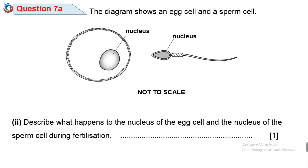Question 7A2: Describe what happens to the nucleus of the egg cell and the nucleus of the sperm cell during fertilization. Fertilization is the fusion or joining together of the nucleus of the egg cell and the nucleus of the sperm cell to form a zygote. During fertilization, the two nuclei fuse together — use the term 'fuse' as it is more scientific.